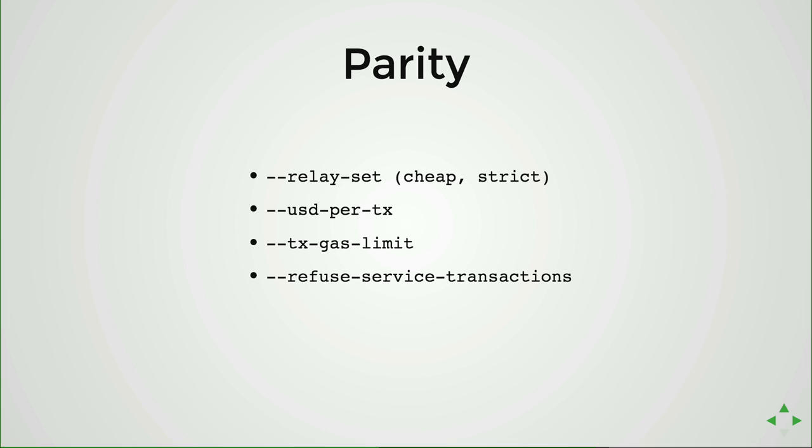These are some Parity CLI parameters you can use to control how your node behaves regarding transaction propagation and mining. Miners usually know this, but ordinary nodes also need to propagate transactions and typically run on default settings. One parameter is relay set. The default setting is 'cheap,' meaning we propagate transactions but never execute them — we validate basic stuff but don't try to include the transaction in a blockchain, and still propagate to other peers. This means we do little computation but might propagate invalid transactions.